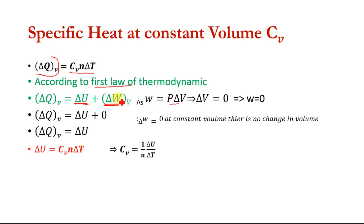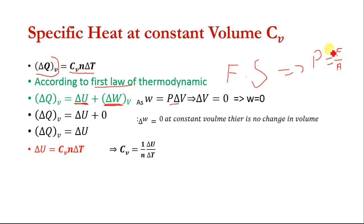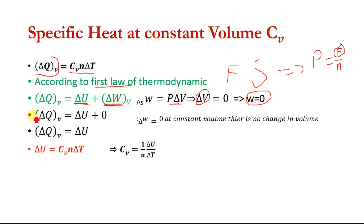This can be proved as W equal to F dot S, where pressure P equals F divided by A, so F equals P times A, and P times A times S equals P del V, which is the work done. When there is no change in volume, del V equals zero, so the work done W equals P del V equals zero. Putting this into the first law of thermodynamics, del Q at constant volume equals del U plus zero, which gives del Q_V equal to del U.